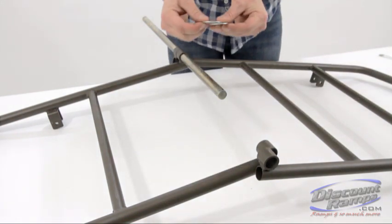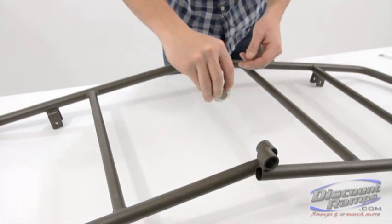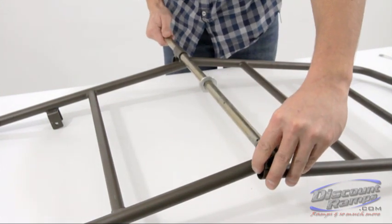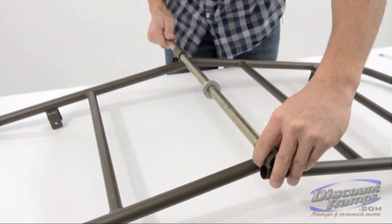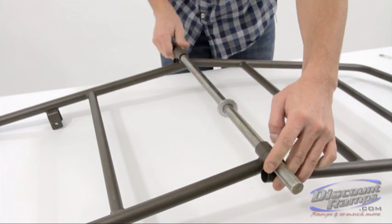Slide two washers onto the axle end that is through the first mounting tube. Next, continue to push the axle until it runs through the axle mounting tube on the other side of the frame.